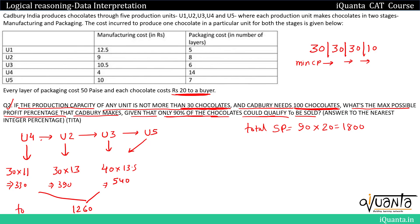Profit percentage = (SP − CP) / CP × 100 = (1800 − 1260) / 1260 × 100 = 540 / 1260 × 100 ≈ 43%. So the answer is approximately 43%.